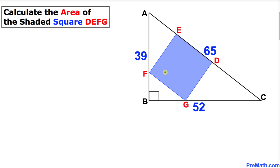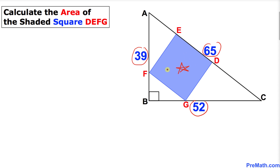Welcome to PreMath. In this video tutorial we have got this right triangle ABC and we have got this shaded square DEFG inscribed in this right triangle. The side lengths of this right triangle ABC are 39, 52, and 65. We are going to calculate the area of this shaded square DEFG. Let's get started with the solution.